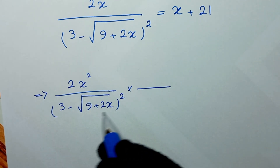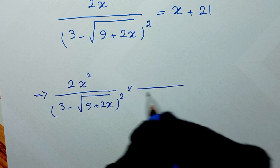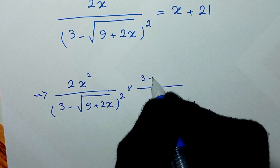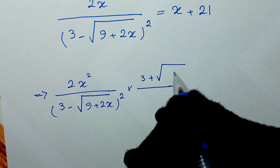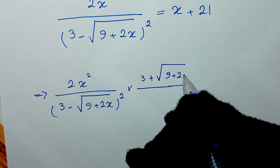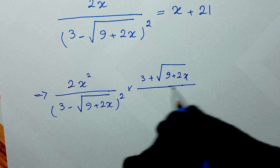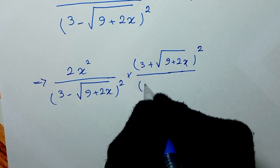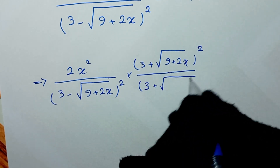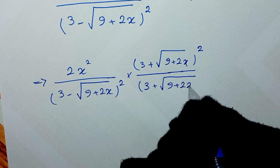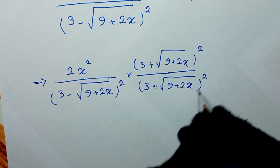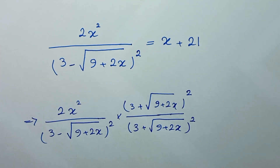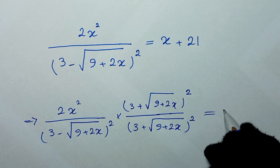The conjugate pair will be 3 plus square root of (9 plus 2x) to the power of 2. So for the denominator we also write 3 plus square root of (9 plus 2x) to the power of 2, and it is equal to x plus 21.